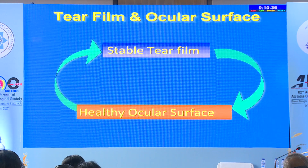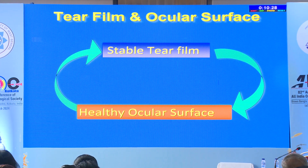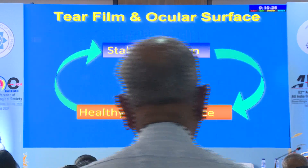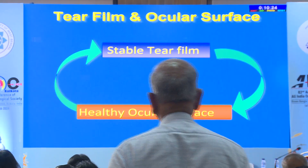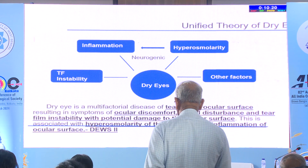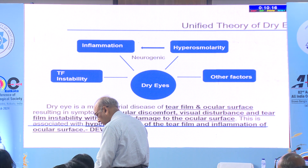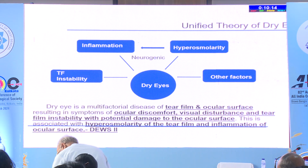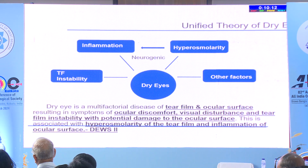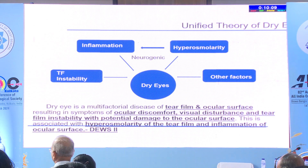The stability of the ocular surface and tear film requires understanding the interdependence between the epithelia, the pre-ocular tear film, and the motor components — meaning the lid anatomical structures, lid movement, and tear drainage. Dry eye is essentially instability of the tear film and potential damage to the ocular surface, resulting in hyperosmolarity and inflammation.